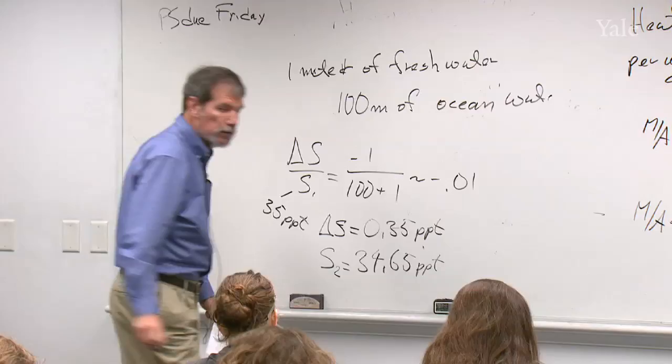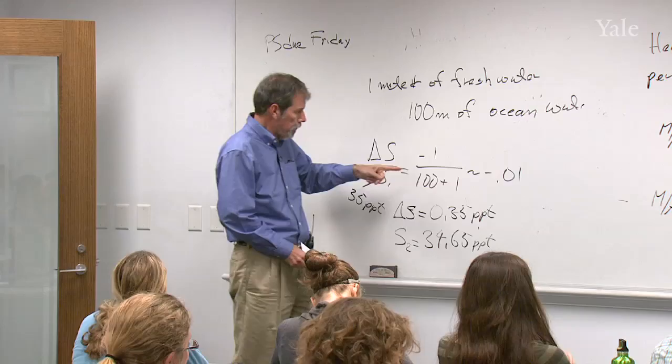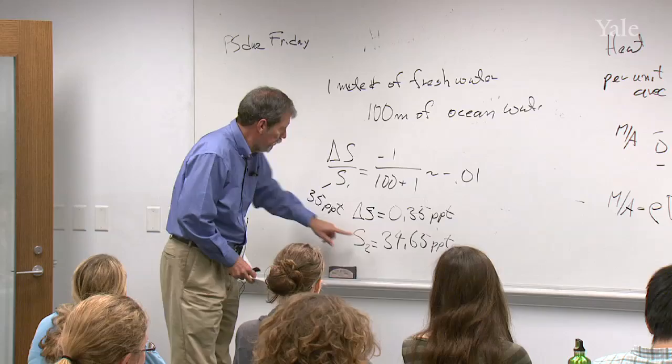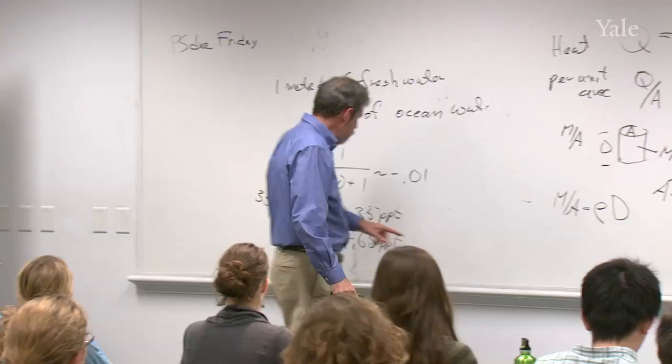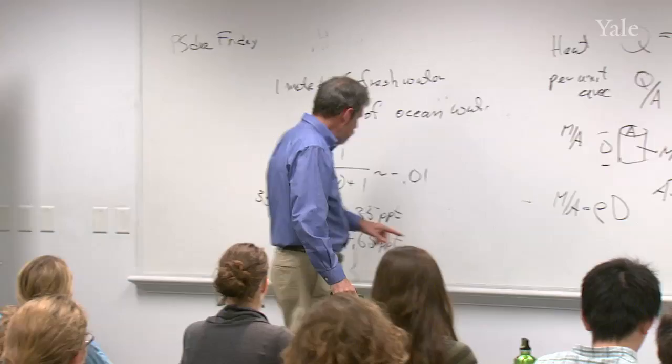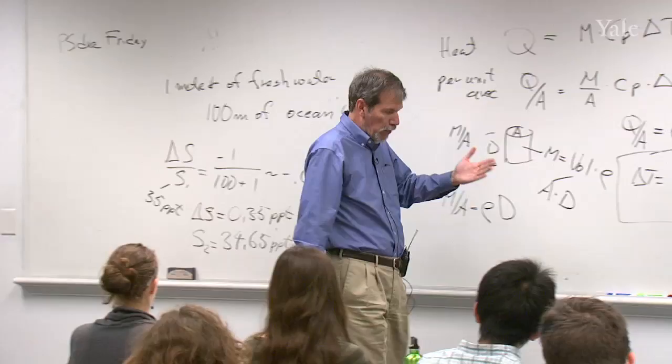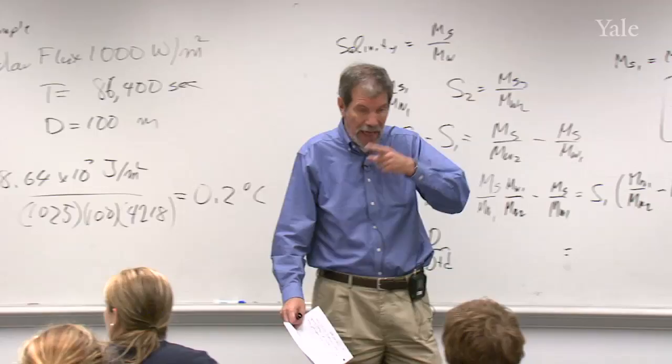If I started with 35 parts per thousand, 100 meter column, added 1 meter of fresh water on top, mixed it all in, the salinity drops by 0.35 parts per thousand, which takes me from 35 to 34.65. That would be a typical situation. And that's a big difference. Considering that the full range of ocean salinity is only from about 34 to 35 and a half, that's a big difference in ocean salinity. And that'll cause circulations to begin, because the seawater density will have changed. Any questions on that?